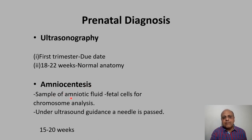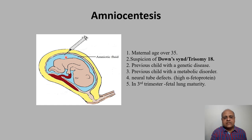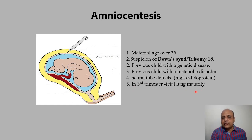Then we have amniocentesis, where a sample of amniotic fluid is taken to obtain fetal cells for chromosomal analysis. Under ultrasound guidance, a needle is passed and the sample is taken, preferably avoiding the placenta. This test is done between 15 to 20 weeks of gestation. Indications include maternal age over 35, suspicion of Down syndrome or trisomy 18, a previous child with a genetic or metabolic disorder, neural tube defect assessment (high alpha-fetoprotein), third-trimester fetal lung maturity assessment, and RH incompatibility. Amniocentesis is an invasive procedure that helps determine whether the child has a genetic disease.